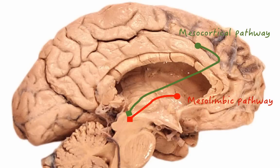The next one is the mesocortical pathway, which projects also from the ventral tegmental area and ends in the prefrontal cortex. This pathway is involved in cognition and executive function — so the next time you study hard for your psychiatry exams, this is the pathway that is involved. There are branches that terminate to the ventromedial parts of the prefrontal cortex, and this pathway is involved in emotions and affect.